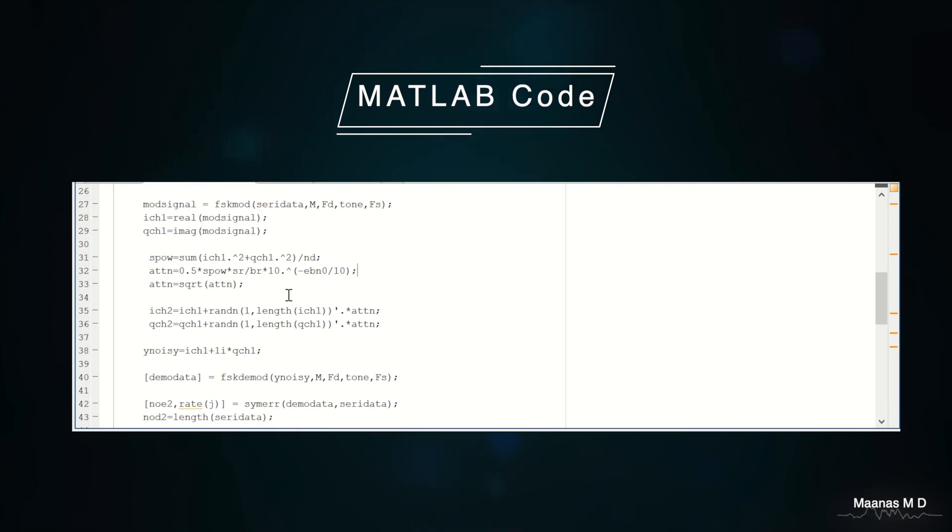We calculate the power of the signal as the summation of the square of the in-phase and the quadrature parts and divide it by the total number of bits to find the average power.